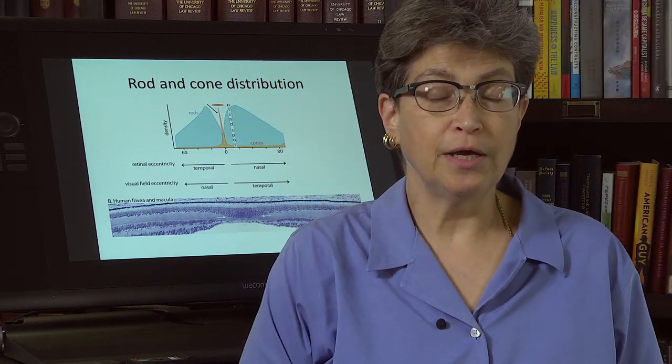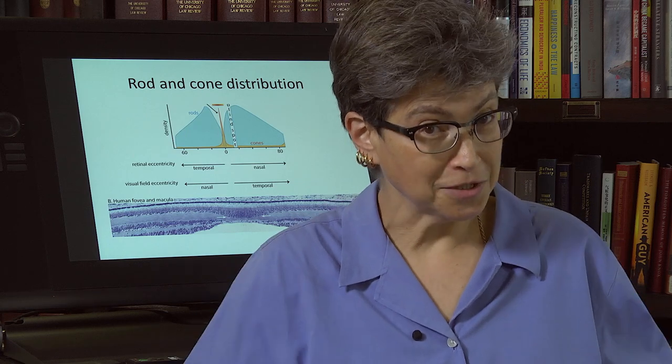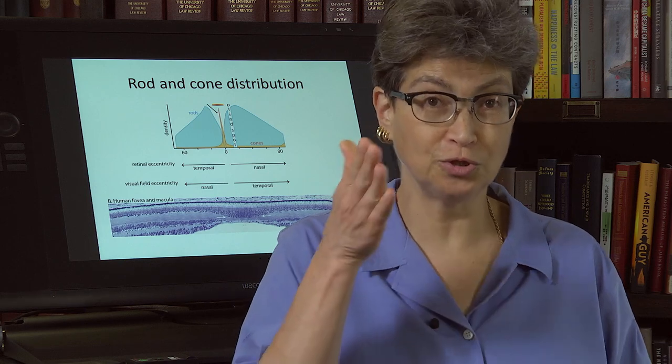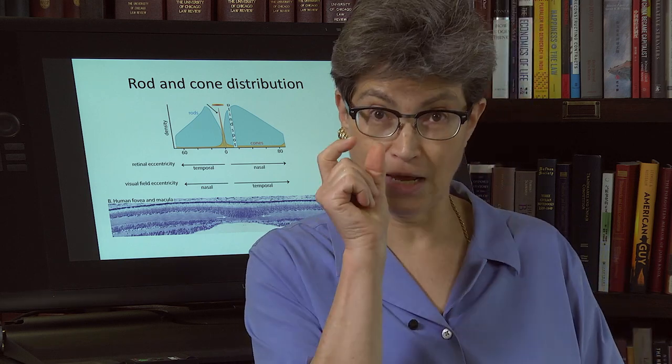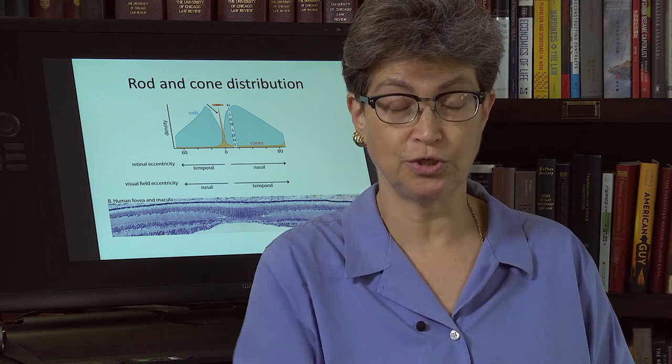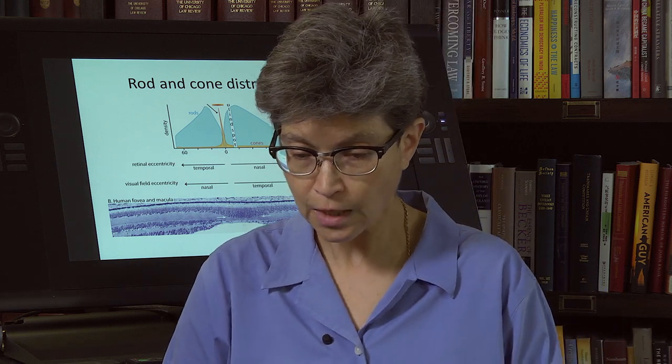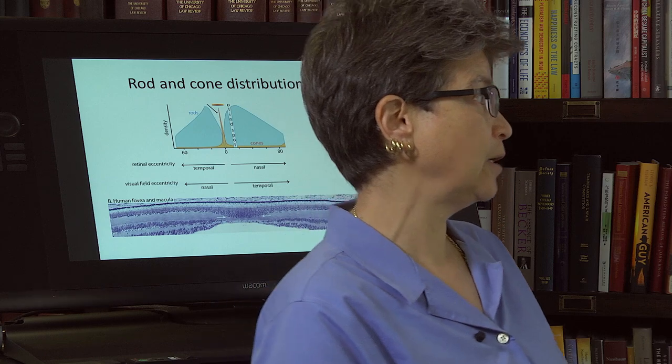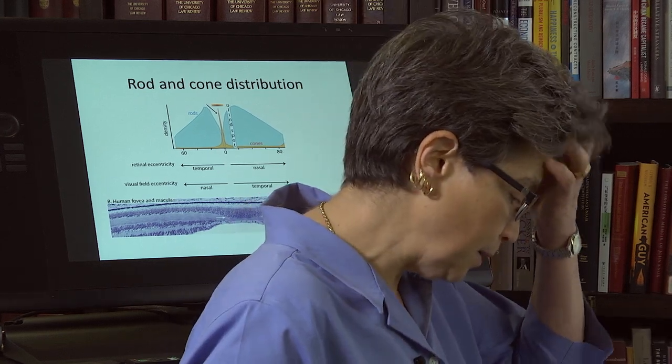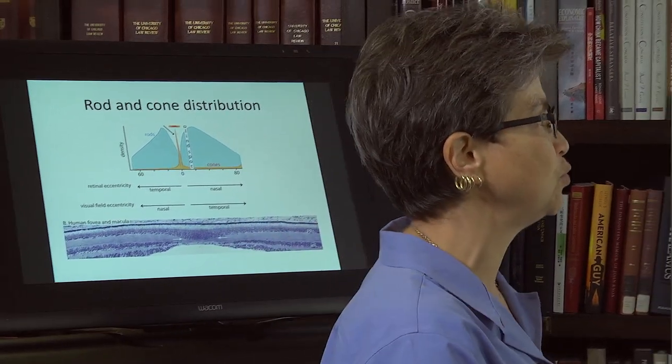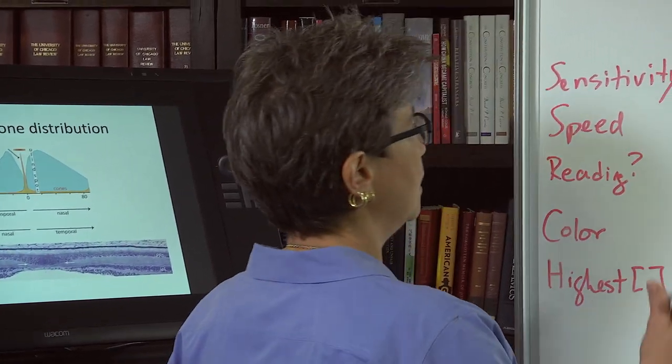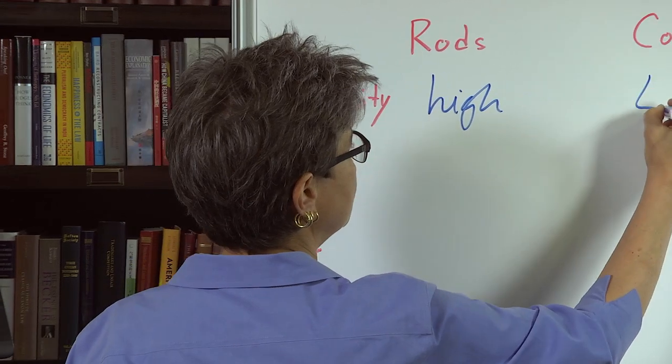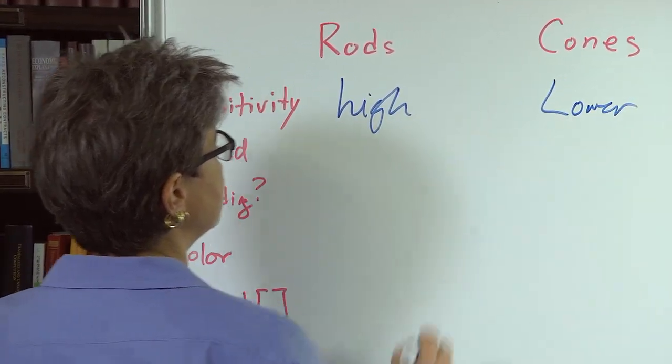On the other hand, let's say you want to read a text. Do you want to look 15 degrees off of it? No, you want to look directly at it using that incredibly high concentration of cones. So that's the kind of difference. Let me go over to the board and be a little more explicit about the differences between rods and cones. Rods have a very high sensitivity to light, whereas cones have a much lower sensitivity to light.